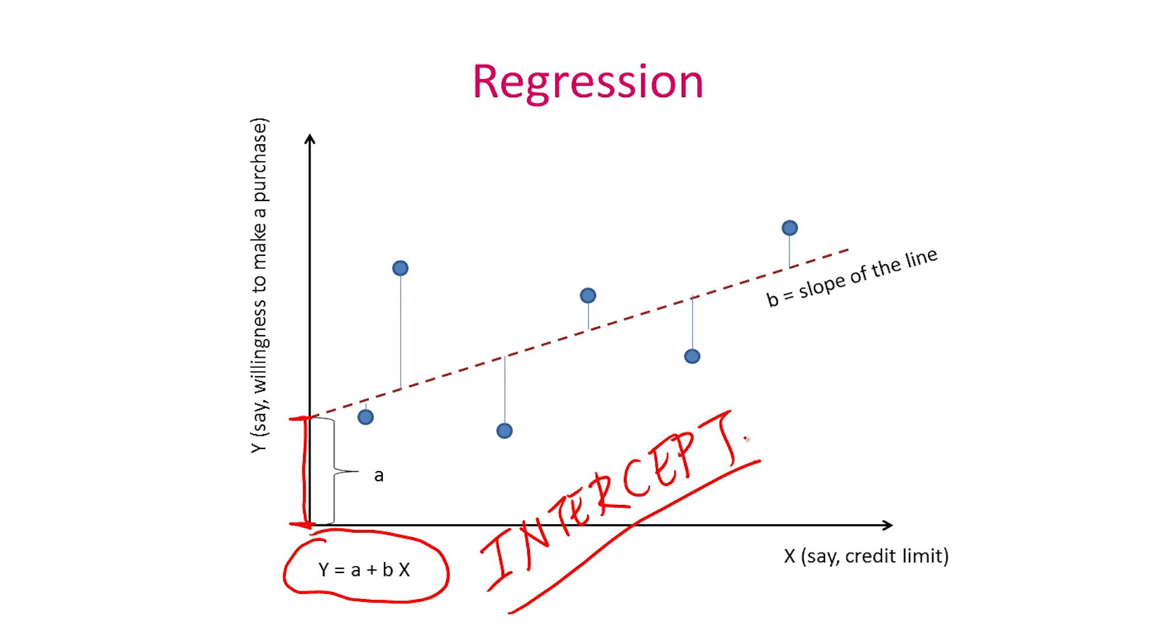The b represents the slope of the line. The steeper the line, for example, if it looked like that, then for every unit change in x, there would be a greater change in y. So again, the intercept represents the baseline, what is the value of y when x is zero. The slope represents the rate of change, how rapidly y increases per unit change in x.